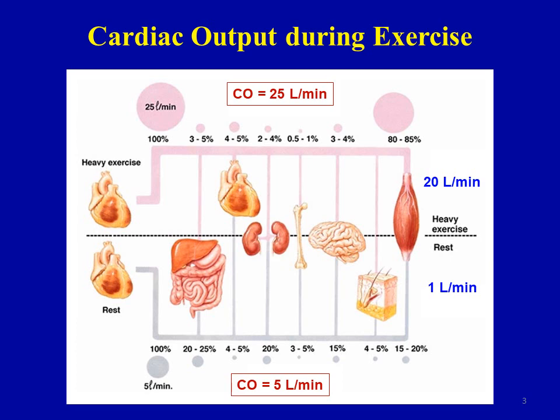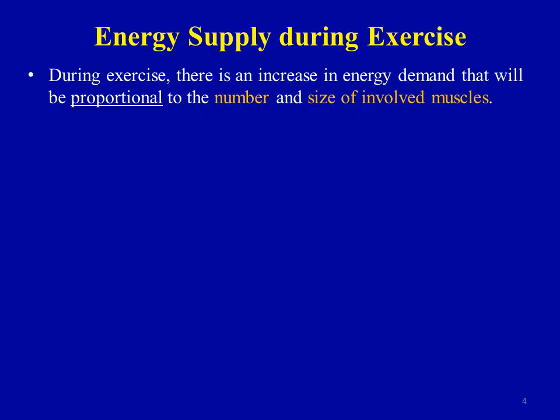Taking five percent of 25 liters per minute gives five times the coronary flow at rest. During heavy exercise, blood flow to the skeletal muscles involved in exercise is about 20 times the resting blood flow. There is an increase in energy demand proportional to the number and size of the involved skeletal muscles, translated by a 20-fold increase in blood flow compared to rest.